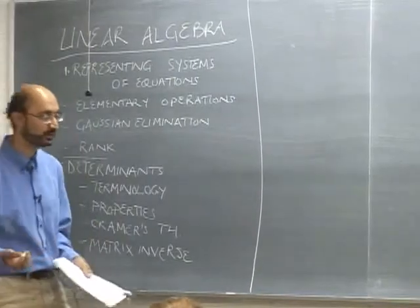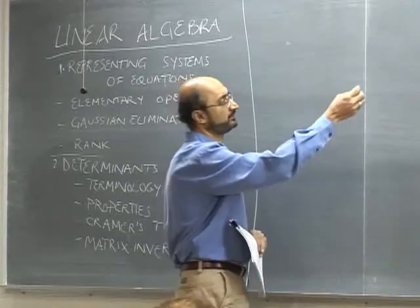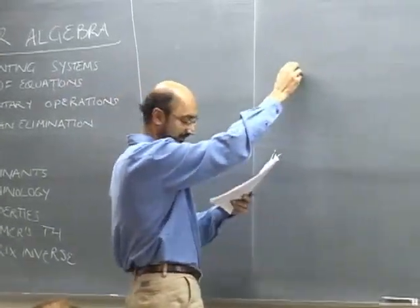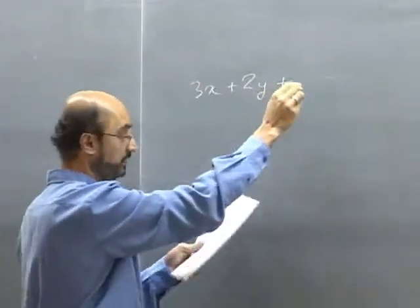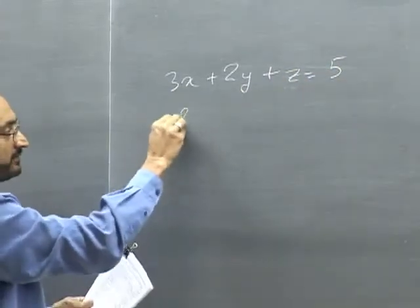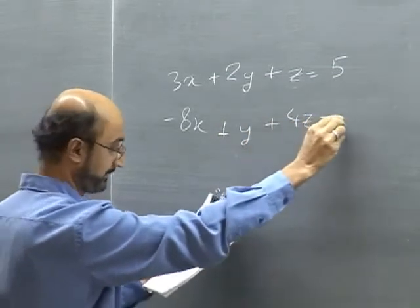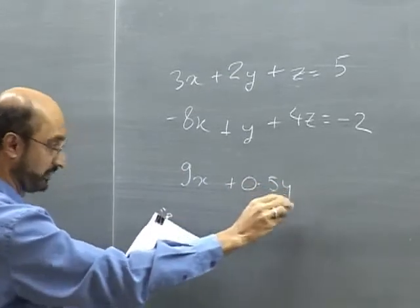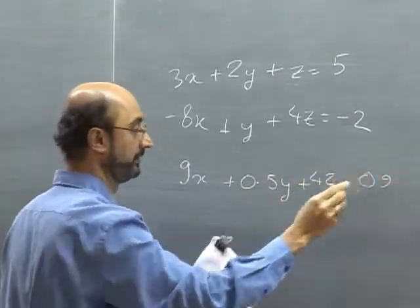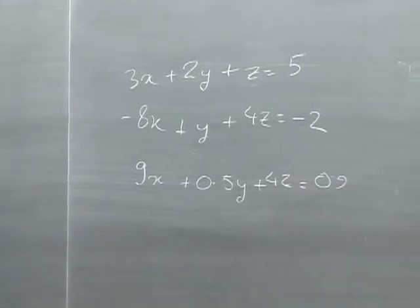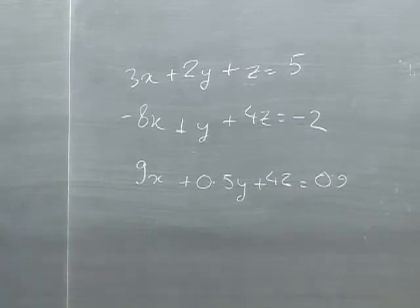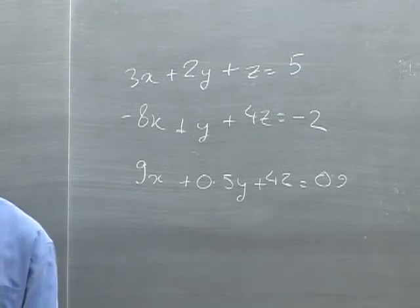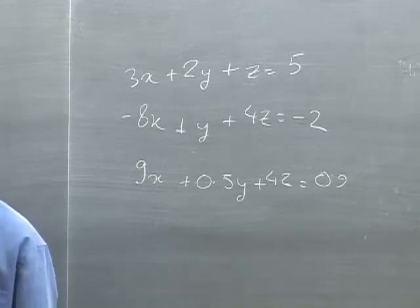In many cases it is possible to represent a problem by a system of linear equations. I'm going to use the example in the text — there's a typo there as somebody pointed out. It should be an x, not a z: 9x plus 0.5y plus 4z equals 0.9. Even if a system is nonlinear, in many cases we can approximate it by a system of linear equations.